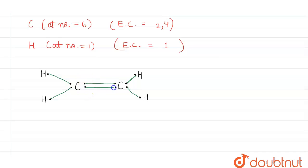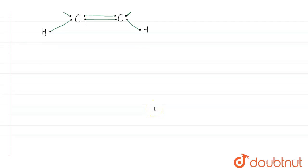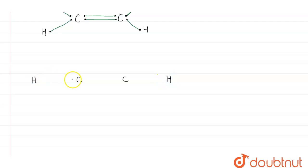After forming the C–H bonds, two electrons are left on each carbon atom. These remaining electrons pair together to form a double bond between the two carbon atoms. This is how the formation of the double bond takes place in C₂H₄.